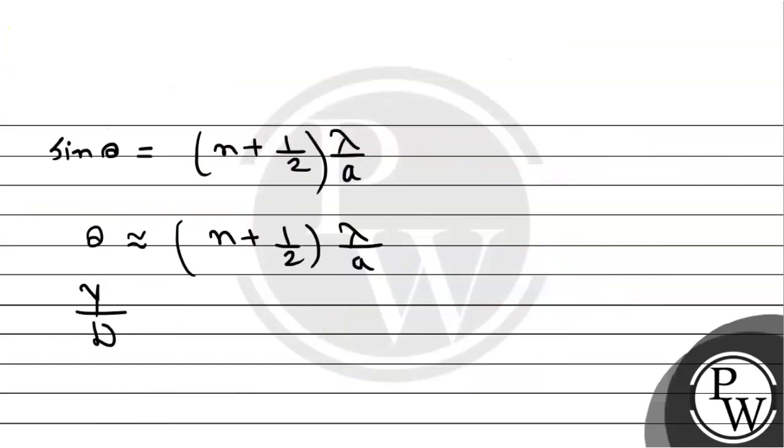So by using the condition of maxima, sin θ equals to (n + 1/2) lambda by a, so we can approximate this with theta. Theta must be equals to (n + 1/2) times lambda by a.